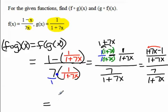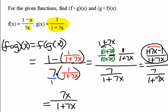So I end up with 7x/(1+7x). That's the numerator. And then in the denominator, if I divide fractions, I flip that or multiply by the reciprocal of the divisor,